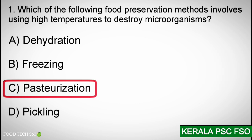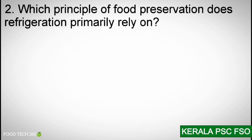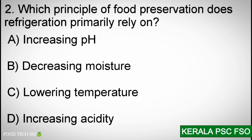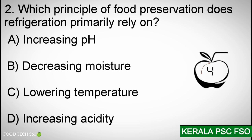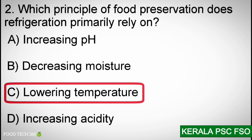Question number 2: Which principle of food preservation does refrigeration primarily rely on? A. Increasing pH, B. Decreasing moisture, C. Lowering temperature, D. Increasing acidity. Correct answer: C.